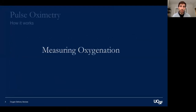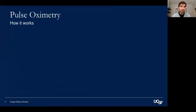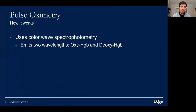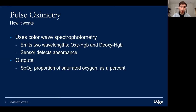First is measuring oxygenation. The most common way we do this is through pulse oximetry, which uses color wave spectrophotometry. It emits two wavelengths — one for oxygenated and one for deoxygenated hemoglobin — and the sensor detects the absorbance. The outputs are SpO2, which is expressed as a percentage of oxygenated hemoglobin, and a waveform.